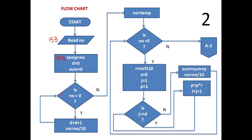Check condition: NO greater than 0. 153 greater than 0 is true, so D is increased by 1. D will be 1 and NO equals NO divided by 10, so NO will be 15. Again, 15 greater than 0 is true, so D will be 2 and NO will be 1. 1 greater than 0 is true, so D will be 3 and NO will be 0. 0 greater than 0 is false, so the loop stops. Final result of D is 3 — the number of digits of NO.